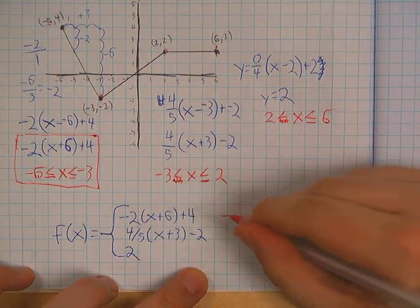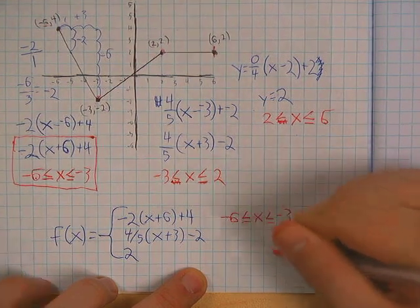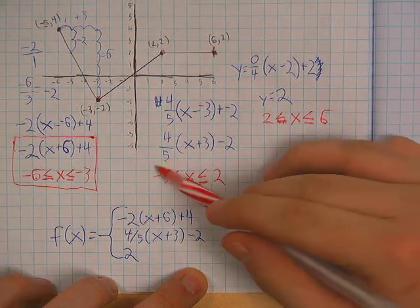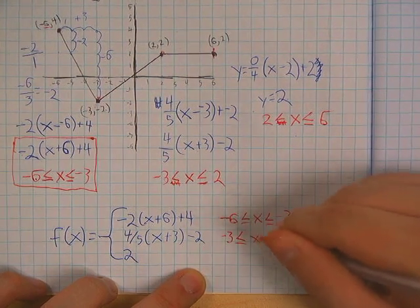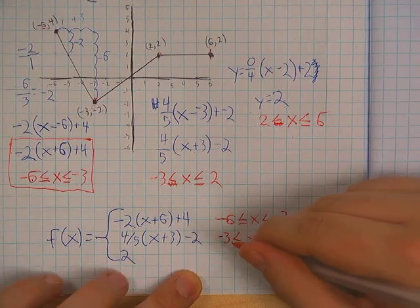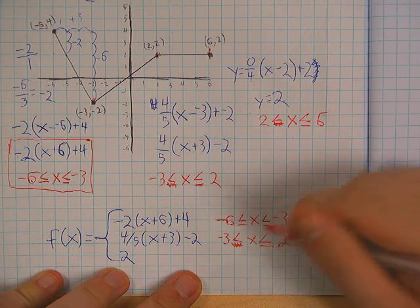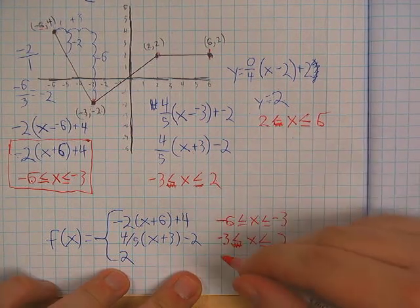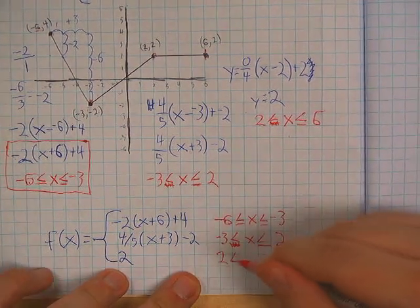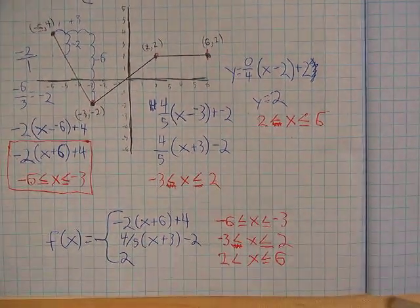Then I list the domains for each piece. The first equation controls the graph from negative six to negative three. The second controls it from negative three to positive two — make sure you don't have less-than-or-equal-to negative three along with greater-than-or-equal-to negative three. And the last one: two is less than x which is less than or equal to six.